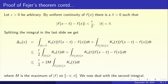So now let us split the integral into two integrals. Delta_nx is the integral of k_n(t) times mod of f(x minus t) minus f(x) dt — the integral over mod t less than delta, plus the integral of the same thing over delta less than or equal to mod t less than or equal to pi. In the first piece we use uniform continuity: mod of f(x minus t) minus f(x) is less than epsilon by 2, which comes out of the integral.